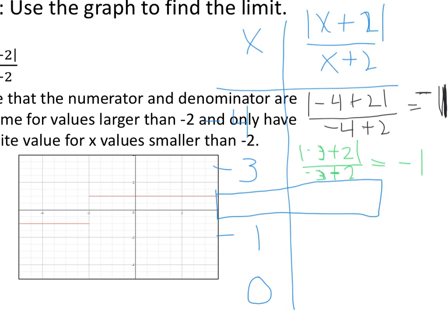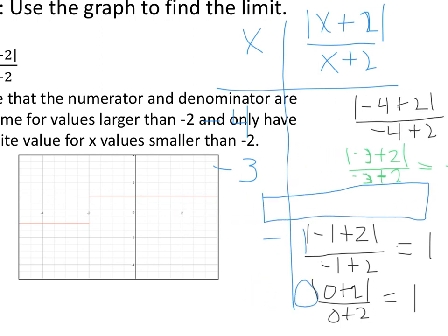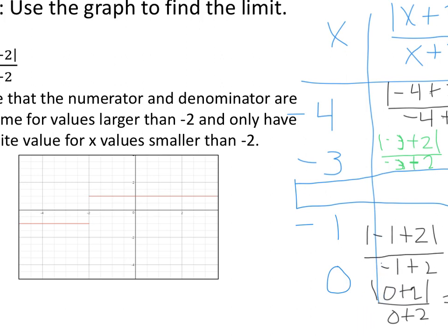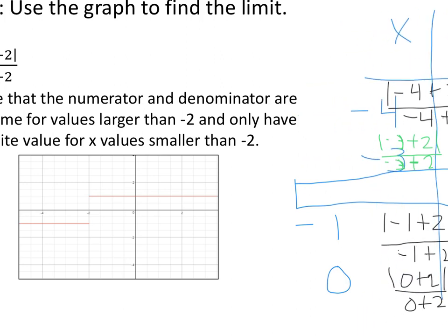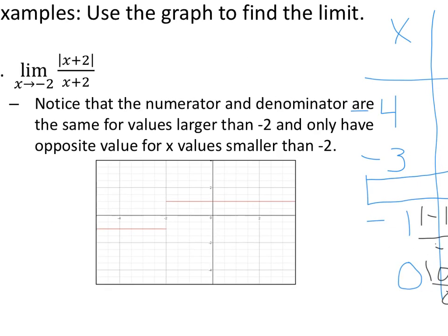Similarly, you could put in values negative 1 and 0. The absolute value of negative 1 plus 2 over negative 1 plus 2. Negative 1 plus 2 is 1. The absolute value of 1 is 1. 1 over 1 is 1. If I put in 0, 0 plus 2, whether that's in absolute values or not, I'm going to get 2 over 2, which is 1. And here we are. Every x value to the right of negative 2 has an output of 1.